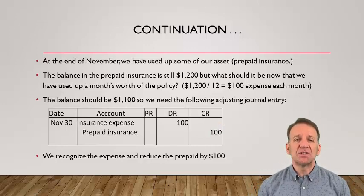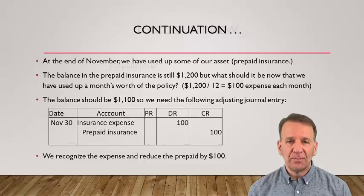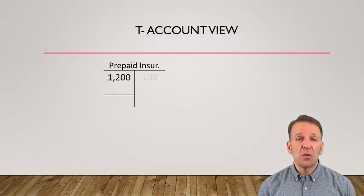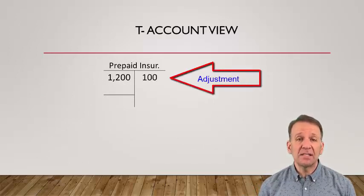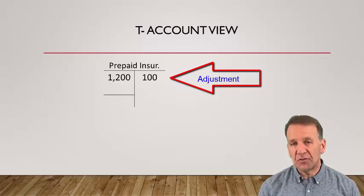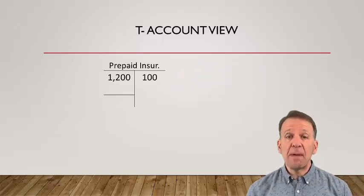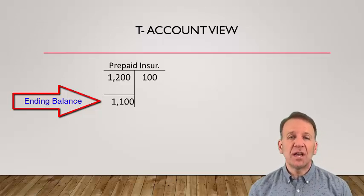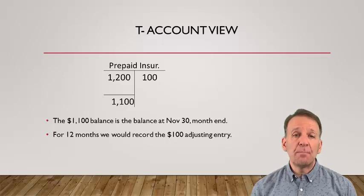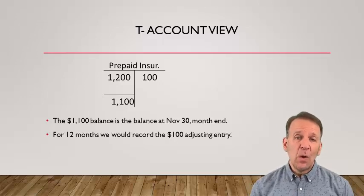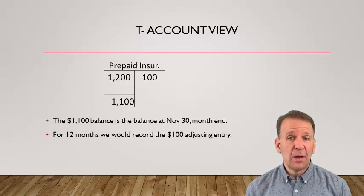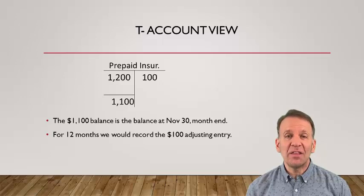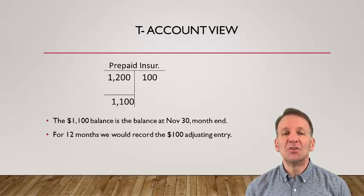Let's take a look at the prepaid insurance account using a T-account. You can see our original entry was $1,200, and on the right-hand side of the T-account is the $100 adjustment that we just recorded. The ending balance is then $1,100. The $100 adjusting journal entry that we prepared at the end of November would be prepared at the end of each month. We would record that $100 journal entry 12 times until the prepaid insurance is used up.